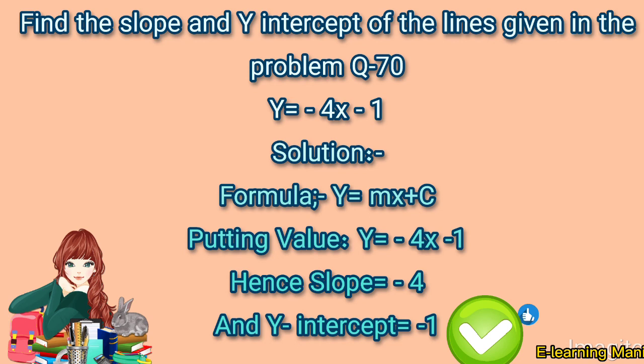Find the slope and y-intercept of the lines given in problem question 70. Question number 70 is: Y = -4X - 1. In this question, we have to find the slope and y-intercept. Solution: The formula is Y = mx + c.